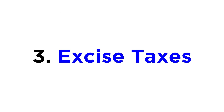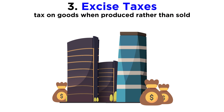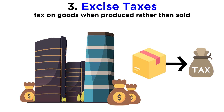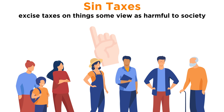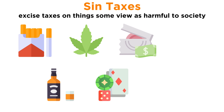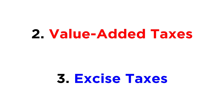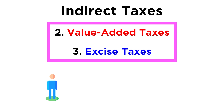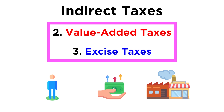Number three: excise taxes. An excise tax is any tax on stuff when it's produced, as opposed to when it's sold. The main thing that makes a tax an excise tax is that businesses pay them, not consumers. They are usually a fixed amount for each unit of a good or service sold, and governments apply them to a narrow range of goods. Excise taxes are often sin taxes, or excise taxes placed on things that some people view as harmful to society, including cigarettes, alcohol, marijuana, gambling, prostitution, gasoline, or even sugary beverages. Both excise taxes and value-added taxes are often called indirect taxes, since consumers end up paying them indirectly as producers and retailers will simply raise their prices when they have to pay excise and value-added taxes.